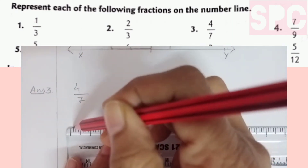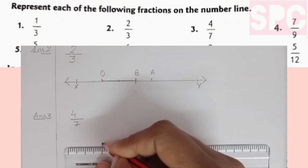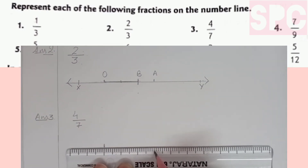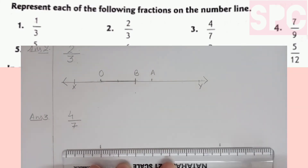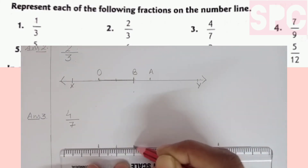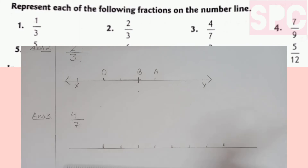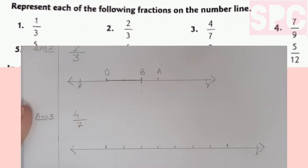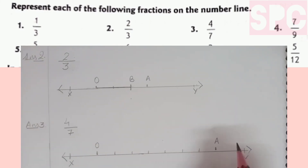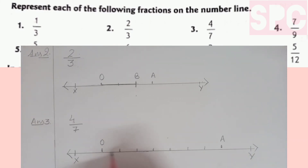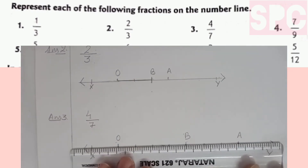Similarly, let's move on to question number 3, which is 4 by 7. We will draw a number line and on this number line, we will take two points O and A which will be 7 units apart because the denominator is 7. We will divide OA into 7 equal parts. At the end of the fourth part - first part, second part, third part, and fourth part - this point will be marked as B. Therefore, OB will represent the fraction 4 by 7 on this number line.